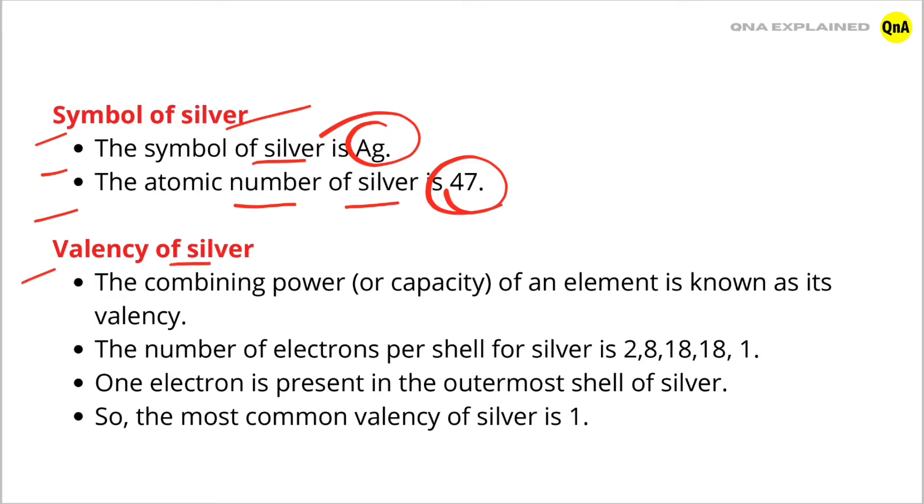Valency of silver. The combining power or capacity of an element is known as its valency. The number of electrons per shell for silver is 2, 8, 18, 18, 1.